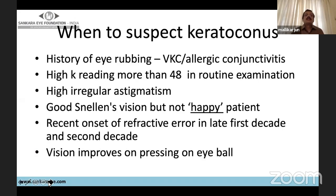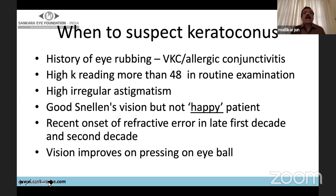When to suspect keratoconus is very important in day-to-day practice, because the diagnosis depends on suspecting the patient and subjecting them to investigation. Suspect if the patient has a history of eye rubbing, especially children with vernal keratoconjunctivitis or allergic conjunctivitis. In routine examination, if the auto-keratometry reading is more than 48 diopters, you should suspect keratoconus.